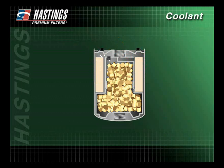SCAs are released back through the diffusion control orifice at a controlled rate. The coolant then flows through the filter media and back out the flow control orifice into the engine cooling system.